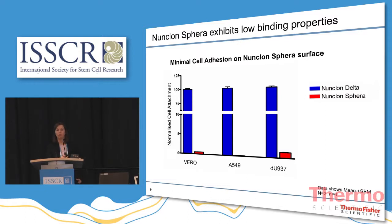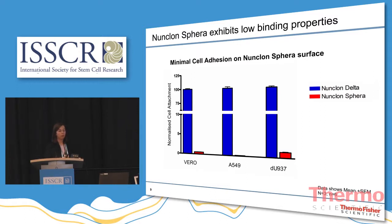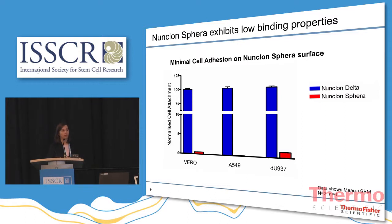The next step was to verify that the Nunclone Sphere surface does inhibit cell attachment. We selected three adherent cell lines: the monkey kidney epithelial cell line Vero, the human lung carcinoma cell line A549, and the human premonocytic cell line U937, which we differentiated to macrophage-like cells. These cell lines all have very strong adherent properties. Using the Nunclone Delta surface as a positive control for cell attachment, the surfaces were rinsed after incubation, residual cells were analyzed, and the number was quantified using a fluorescent assay. The results, normalized to the positive control, show virtually no cell attachment on the Nunclone Sphere surface. Taken together, the low binding properties are highlighted by minimal absorption of extracellular matrix proteins and very low attachment of otherwise adherent cell lines.